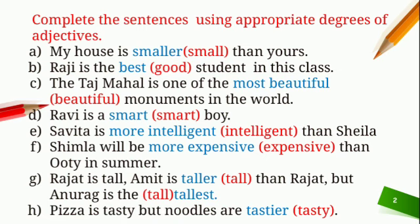Sentence 3: The Taj Mahal is one of the dash beautiful monuments in the world. As we know, there are a number of monuments in the world. Here we will use superlative degree, and the superlative degree of 'beautiful' is 'most beautiful'. Our answer will be: The Taj Mahal is one of the most beautiful monuments in the world.